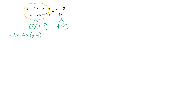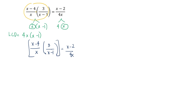Recall that in solving rational equations — just like what we did in addition and subtraction — after getting the LCV, we multiply both sides of the rational equation by the derived LCV. Same thing we will do this time. So let's rewrite the given and multiply both sides by the derived LCV.